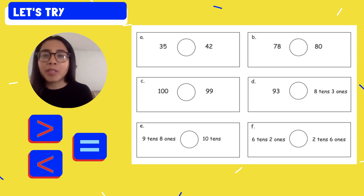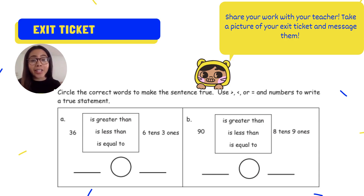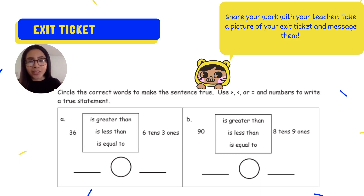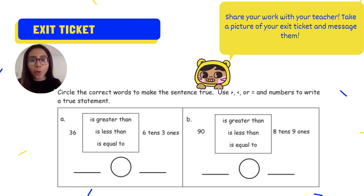Alright Kipsters, thank you for helping me solve all of these problems. For your exit ticket, you have two problems to compare. You have letter A, thirty-six, and you're comparing it to six tens and three ones. You have to decide which symbol you want to use. And remember, for letter A and for letter B, think about where the alligator's mouth wants to be open towards. I'll see you tomorrow, Kipsters!